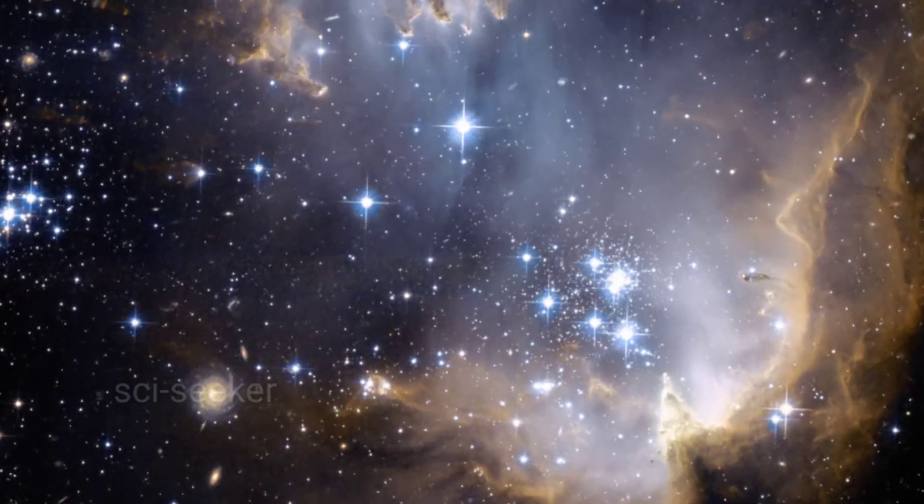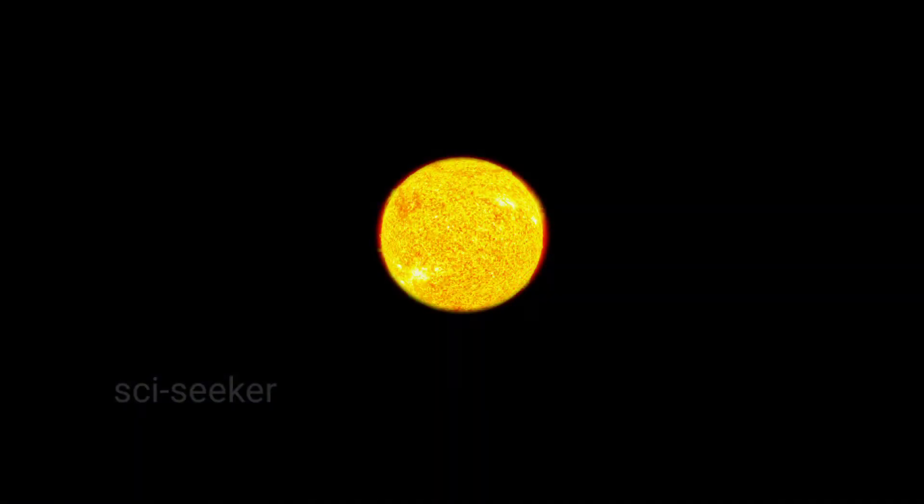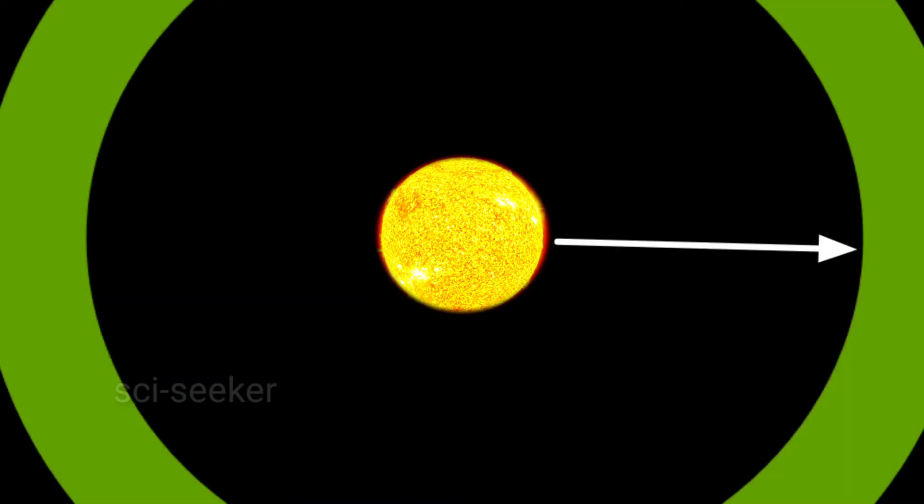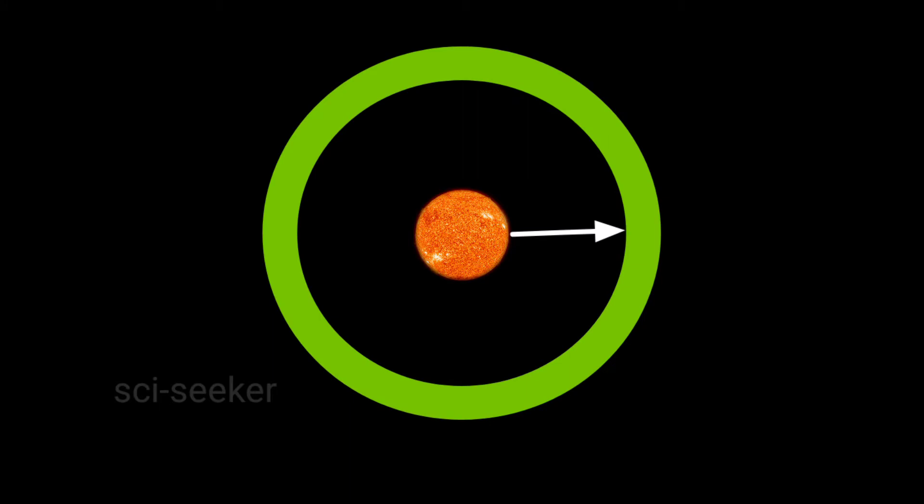The location of the habitable zone around a star depends on the type of that star. Bigger hotter stars have their habitable zone further out, while smaller cooler stars have habitable zone much closer in.